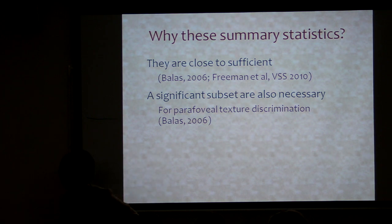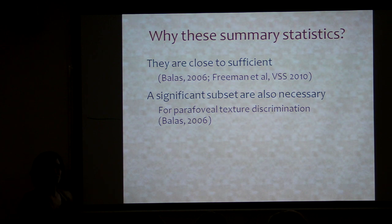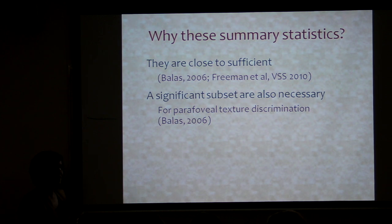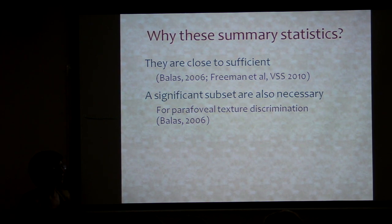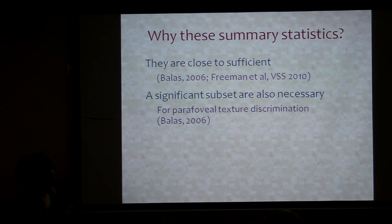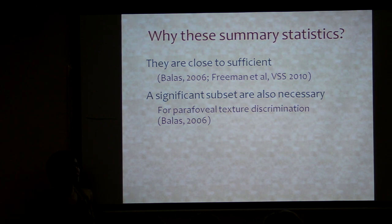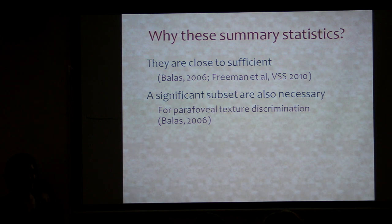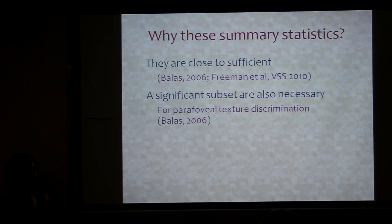Some hints, even before we came into the picture and some afterwards, that these are a good set. First, they're close to sufficient — meaning if you use this full set of statistics and ask people to do texture discrimination between a synthetic texture and an original in the periphery, people are quite bad at it, so you haven't thrown out too much information. Similarly, Jeremy Freeman and Ero Simoncelli have done work where they do real scene perception and show that if you're using all these statistics to represent the scene, people have a very hard time telling the difference between a synthesized scene and the original scene.